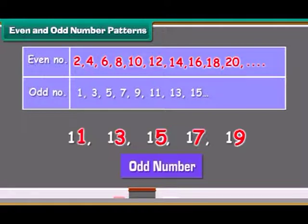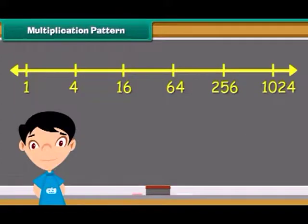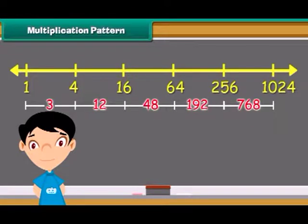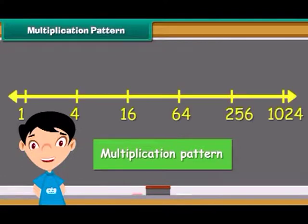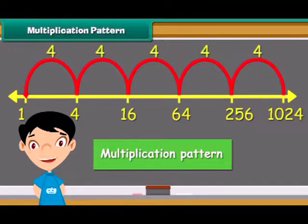Look at the pattern given here: 4, 16, 64, 256, 1024. The differences between two numbers in the series are varying. The difference is 12, 48, and 192. This means they do not follow addition and subtraction patterns. The pattern followed is called a multiplication pattern. In this pattern, the next number is obtained by multiplying the number by 4.